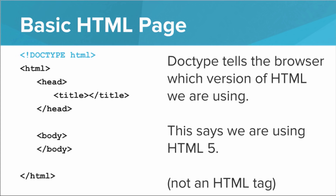So here we have the DOCTYPE. DOCTYPE tells the browser which version of HTML we are using. So this tag says that we're using HTML5. Note that this is not an actual HTML tag — this is just a declaration at the top of the file telling the browser which version of HTML we're using. You'll need this at the top of all of your HTML pages.